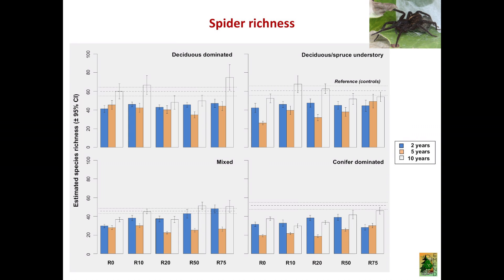The controls are reference lines, and we're comparing everything toward the control. For spiders, there is a significant decrease in species richness after harvesting regardless of cover type. However, recovery differs by forest cover type. In conifer stands, nearly none of the retention treatments have recovered to the reference control, whereas in deciduous and deciduous-with-spruce-understory stands, ten years after harvest we are seeing the same number of species as in the controls. These are great news, but it's not the whole story — having the same richness doesn't mean the same composition.